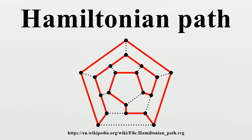Examples: A complete graph with more than two vertices is Hamiltonian. Every cycle graph is Hamiltonian. Every tournament has an odd number of Hamiltonian paths. Every platonic solid, considered as a graph, is Hamiltonian. The Cayley graph of a finite Coxeter group is Hamiltonian.